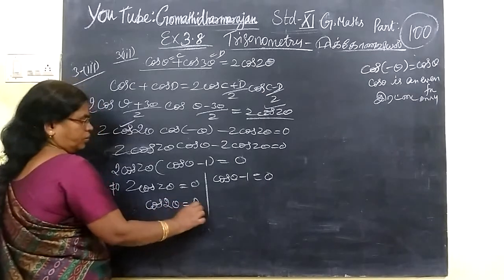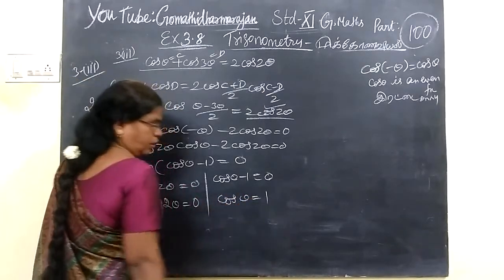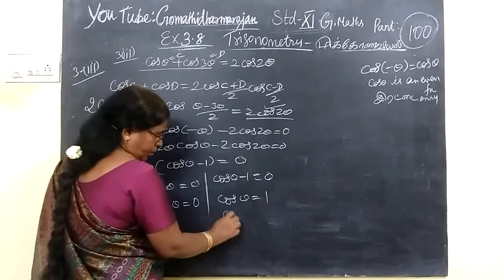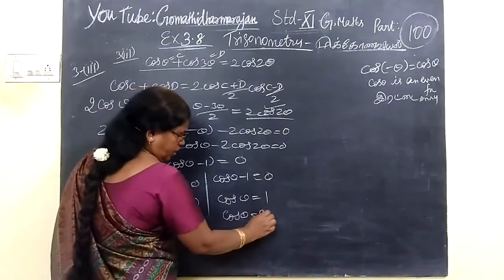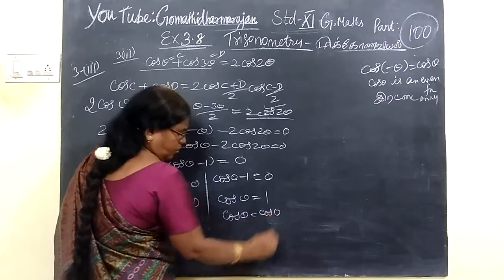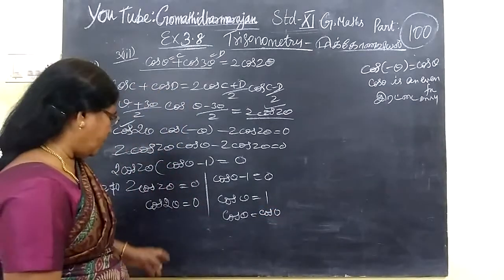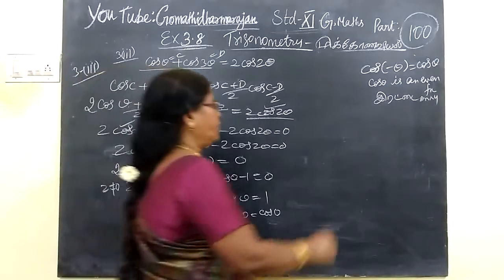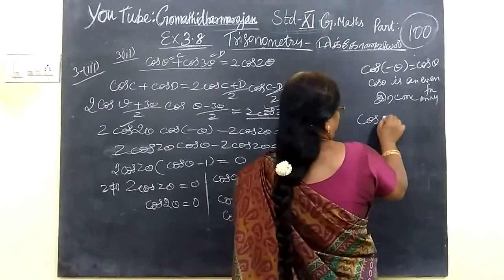2 is not equal to 0, therefore cos 2θ equals 0 or cos θ equals 1. Cos θ equals cos 0 because cos 0 is 1.